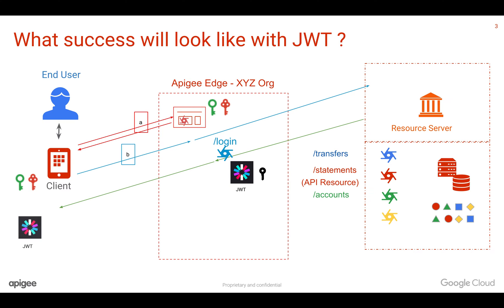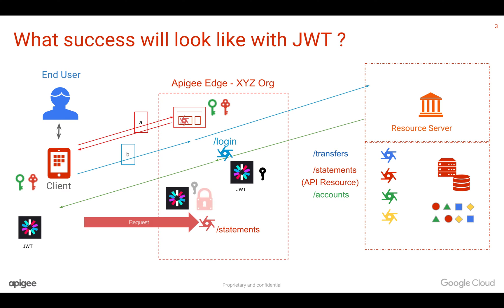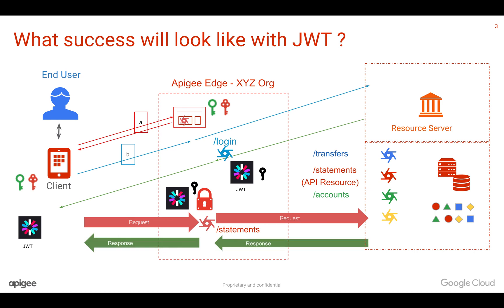In the subsequent steps, the client can present the JWT token, and Apigee can verify this JWT token with the signed secret. Once it is valid, it can give access to the backend services and the response will be sent back to the client.